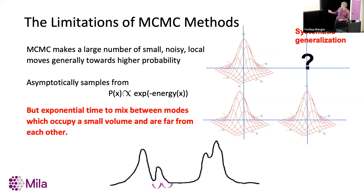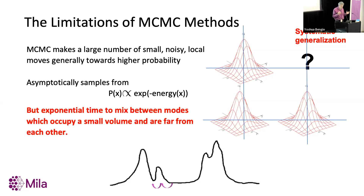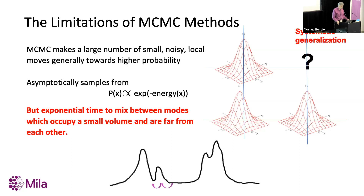We can fix the mode mixing problem using machine learning. Imagine we've already seen three modes — we got some x's for which we know the score, some happening to be around these modes. Instead of just doing little perturbations as in MCMC, we can be bold and generalize: maybe there's another mode at some other point. That's what machine learning does — it generalizes. You train a generative model on a bunch of faces and it will invent new faces, possibly quite different from anything it has seen. We need to train these generative models not with data but with this black-box reward function.